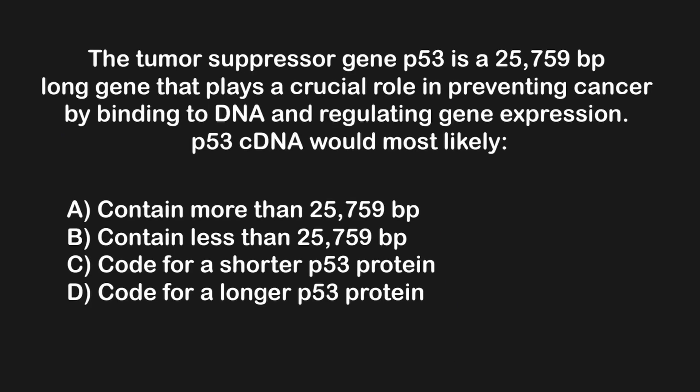Now that we understand what the MCAT expects us to know about cDNA, let's look at a couple of questions. This question asks: the tumor suppressor gene P53 is a 25,759 base pair long gene that plays a crucial role in preventing cancer by binding to DNA and regulating gene expression. P53 cDNA would be most likely to: A) contain more than 25,759 base pairs, B) contain less than 25,759 base pairs, C) code for a shorter P53 protein, or D) code for a longer P53 protein. To solve this problem, we need to recall what differentiates cDNA from regular genomic DNA, as well as what makes them the same.